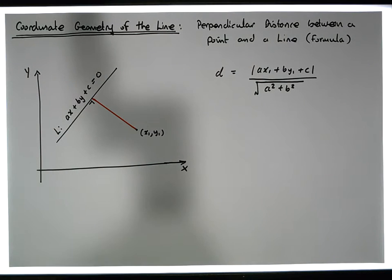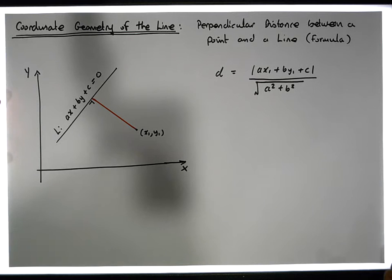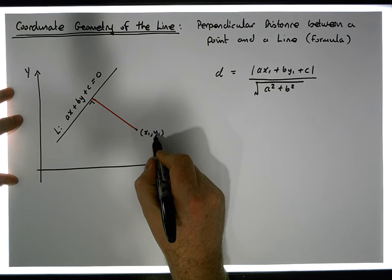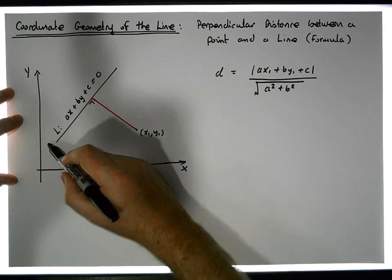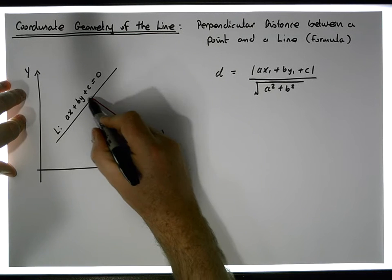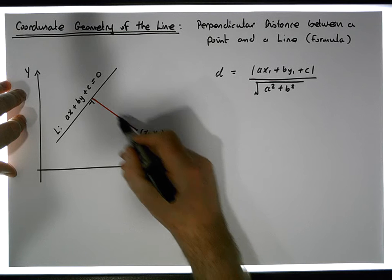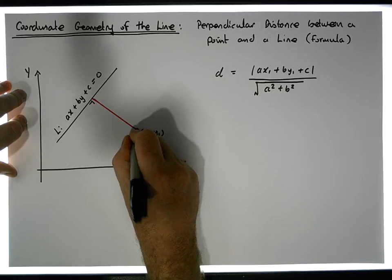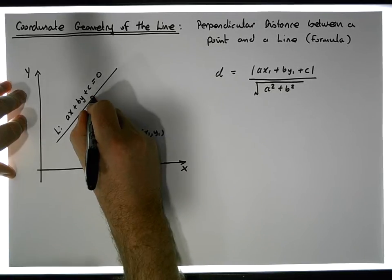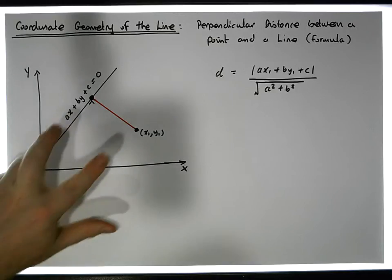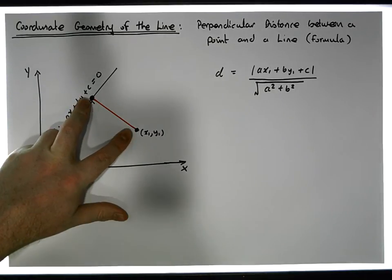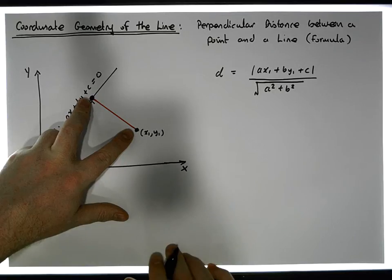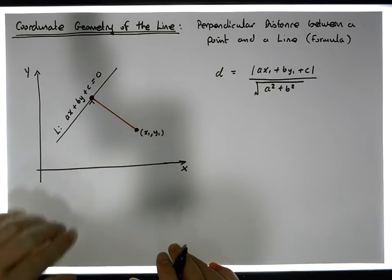Now we do know how to calculate distances between two points. So the first thing we should do is try to find another point. We have point (X₁, Y₁), and what we should try to do is find the point along line L that intersects with the perpendicular line segment from (X₁, Y₁). Once we have those two points, we can use the distance formula to calculate the perpendicular distance from the point to line L.